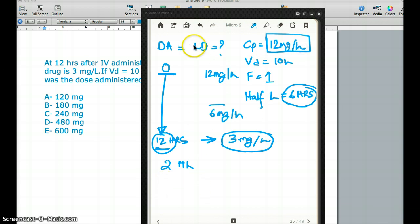So our loading dose is going to be CP, which is 12 milligram per liter. I'm very careful with the units. And so far, I'm happy because of the milligram. Times VD is going to be 10 liters. The liters cancel out. Times 1 by 1, which is the bioavailability. So really, I'm left with 120 milligram. So the answer is going to be A. The loading dose is going to be 120 milligram.